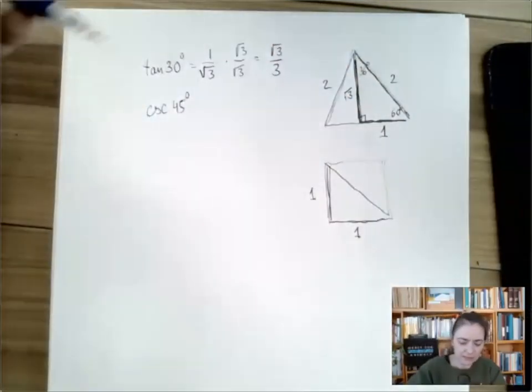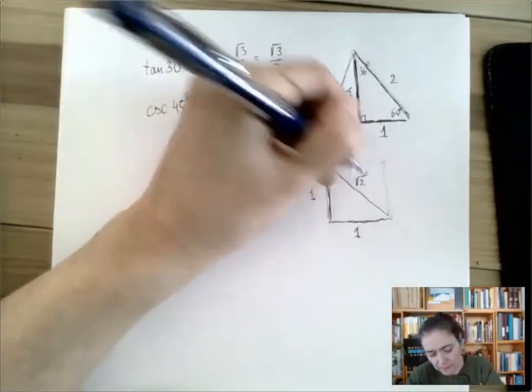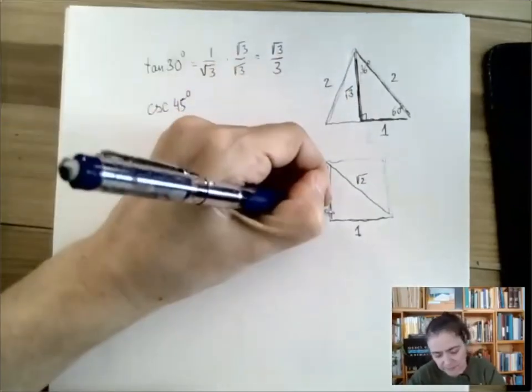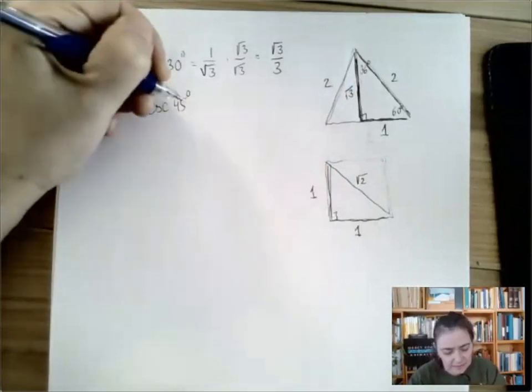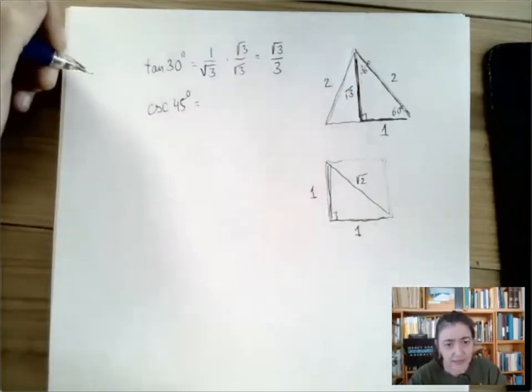So if we select the shorter sides of this isosceles right triangle to be one unit long, then by the Pythagorean theorem, we're going to get square root of two for the hypotenuse.